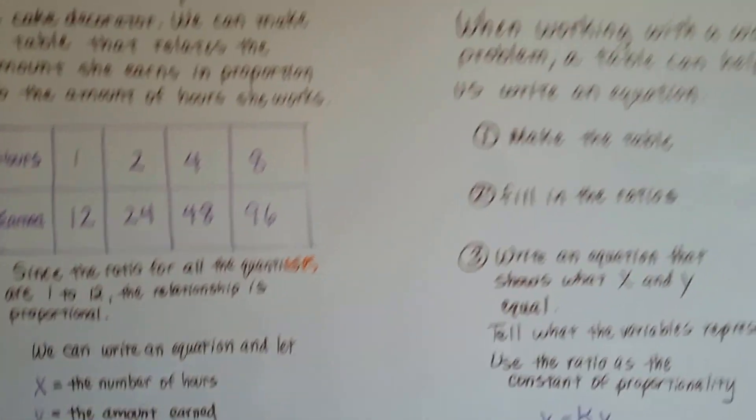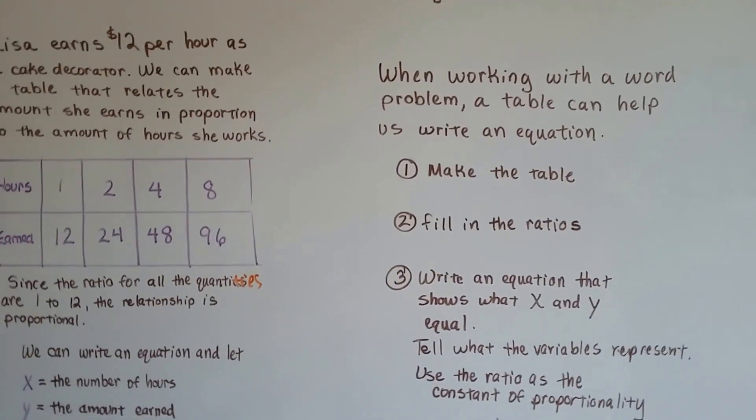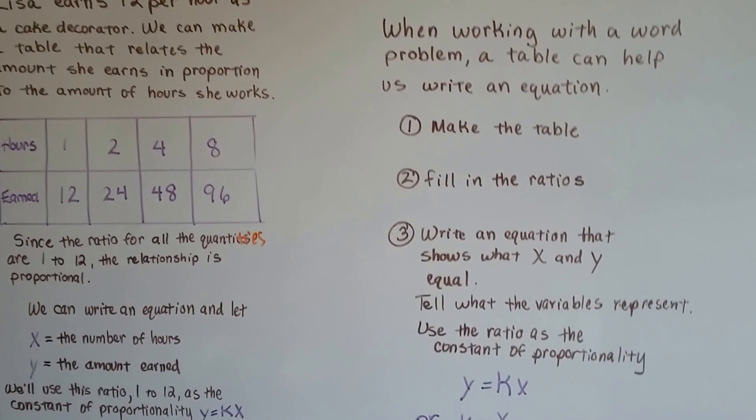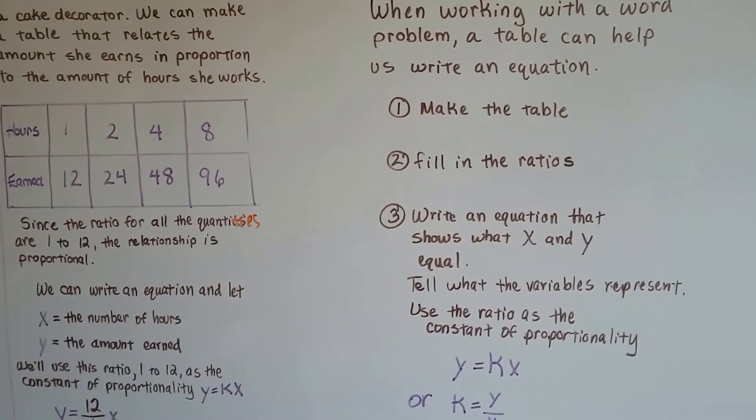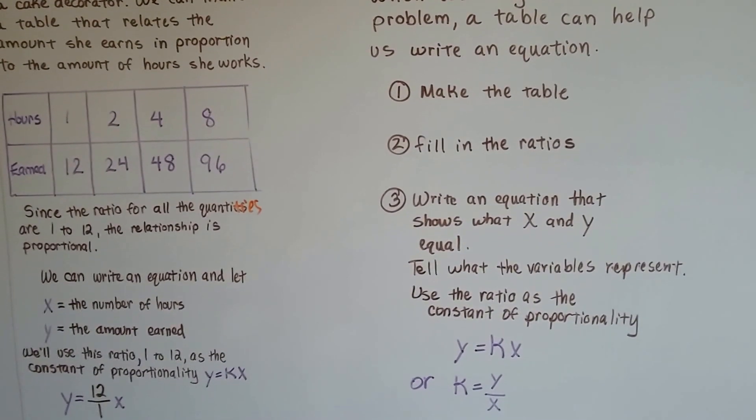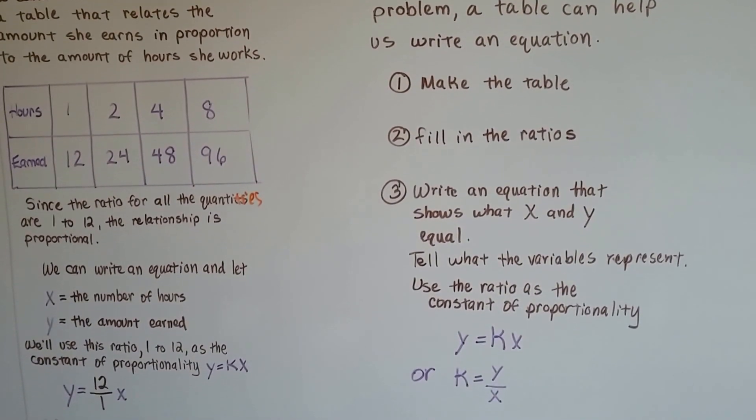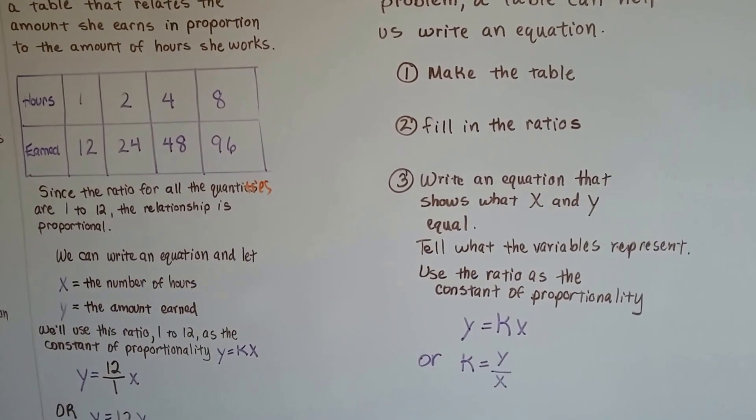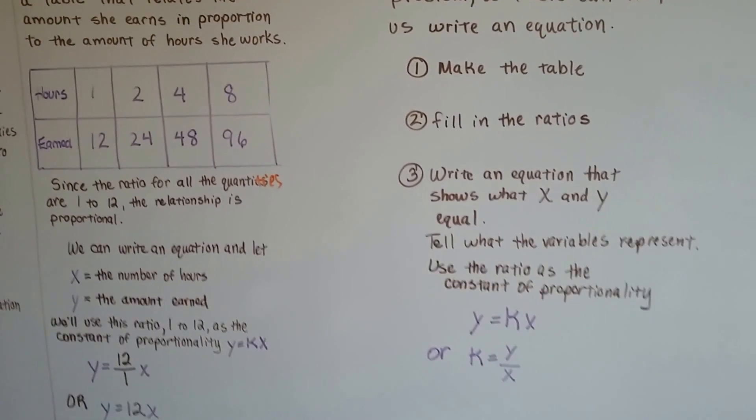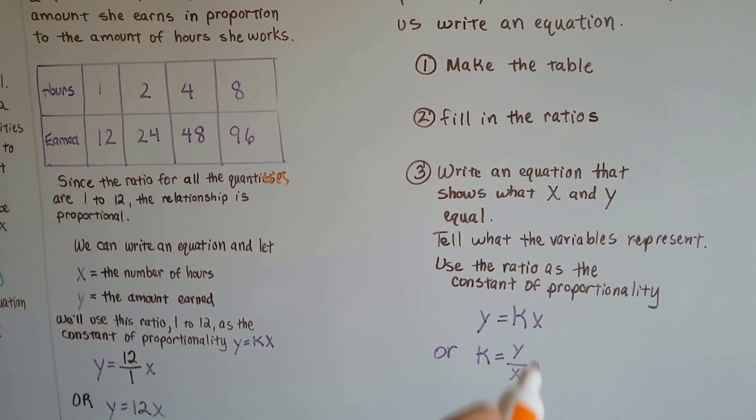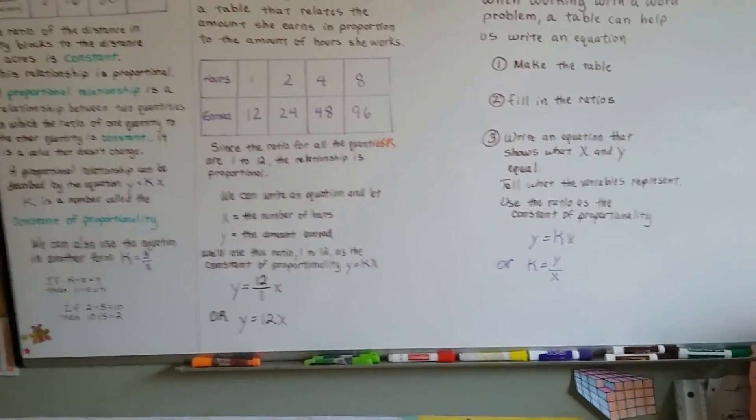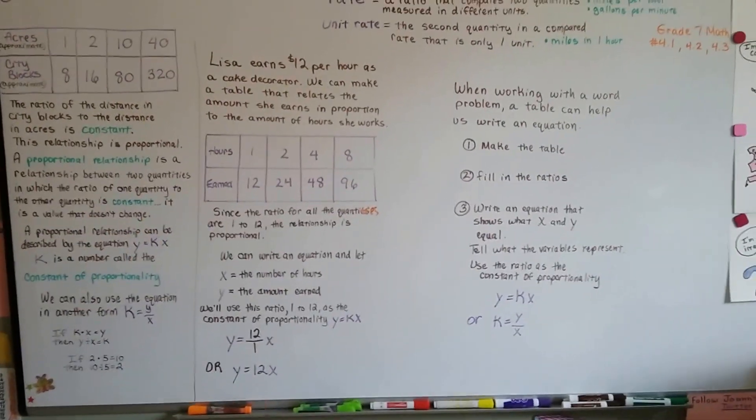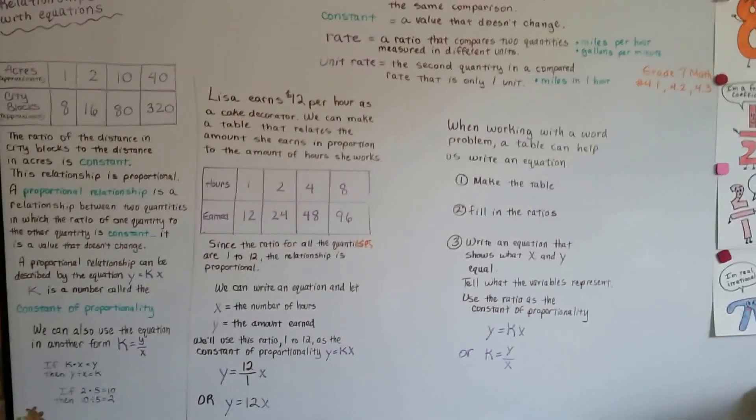When working with a word problem, a table can help us write an equation. We make the equation. We fill in the ratios. We write an equation that shows what x and y are equal. It tells what the variables represent. We use the ratio as a constant of proportionality. y equals k times x or k equals y divided by x. So remember, fractions are just little division problems, right? So that's how we can use equations. So you're going to come across this k equals y over x and y equals kx using proportions, okay?